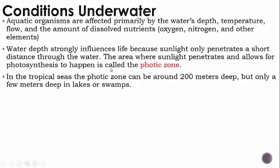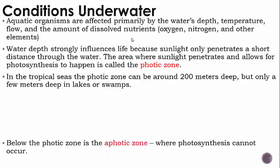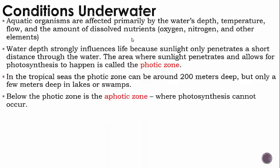When we look at lakes or swamps, we know that there are all kinds of other things in there, and that lakes and swamps are not as clear as the ocean is. That's why the photic zone is only a few meters deep in lakes or swamps.